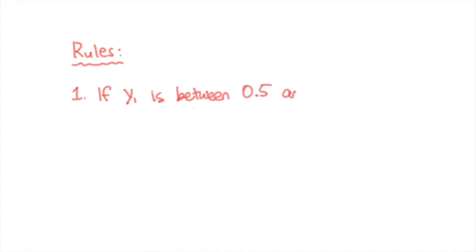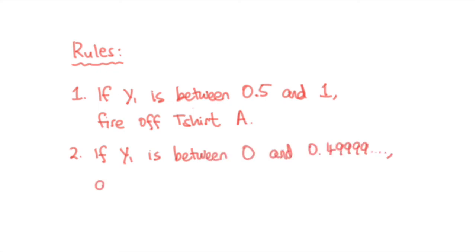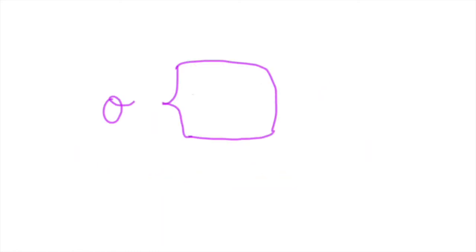So if our y1 returns anything in the range of 0.5 to 1, we fire off the t-shirt A neuron. And if y1 returns anything in the range of 0 to 0.4999999, we don't fire off the t-shirt A neuron. Same goes for t-shirt B. So our little O with a cool hair dude, or sigmoid, is great for binary classification problems like to activate or to not activate.